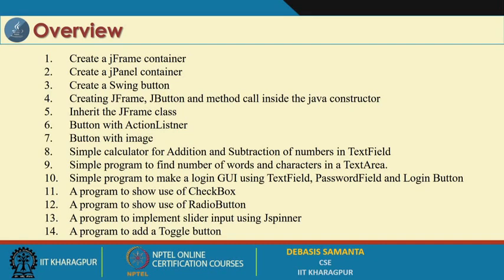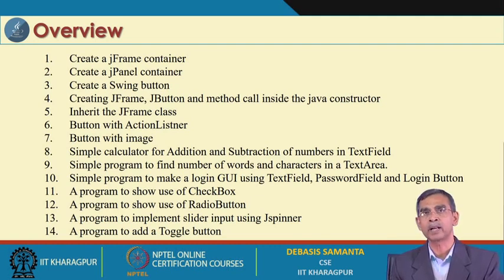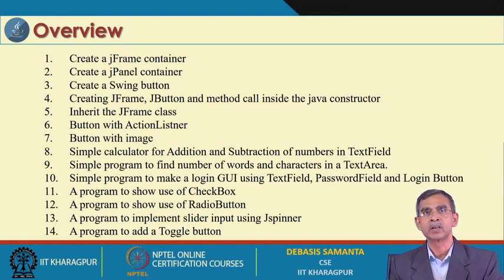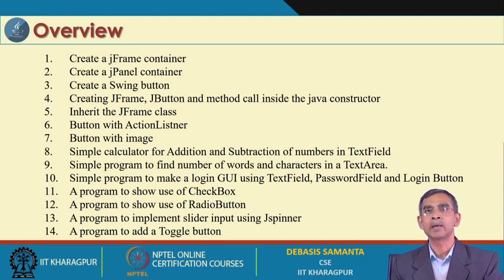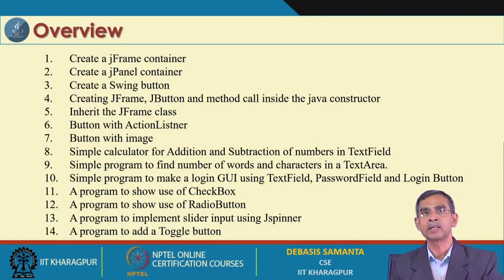In this demonstration module, we are going to cover how to create a JFrame — that means a frame in Java Swing — and then panel and then swing buttons, actually different components of Swing. Whenever we include these components, there are a few things to remember: either using a constructor, a frame class, or the action listener method. We will also see what makes the JButton different from the AWT button — how a button can include an image, that means a button with image.